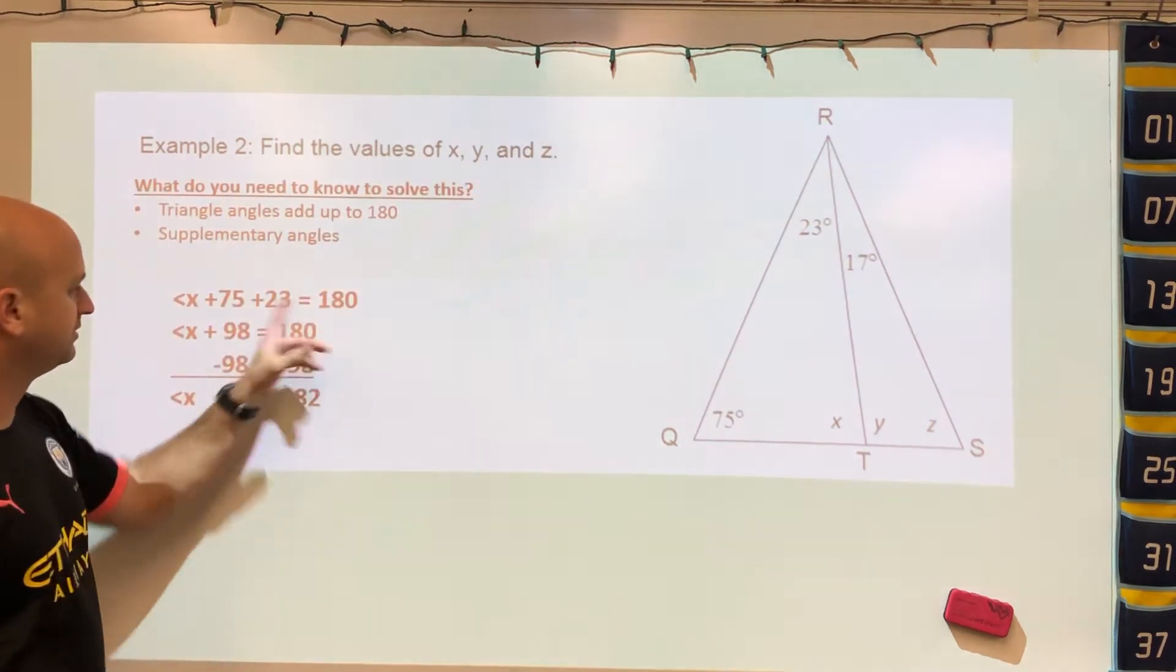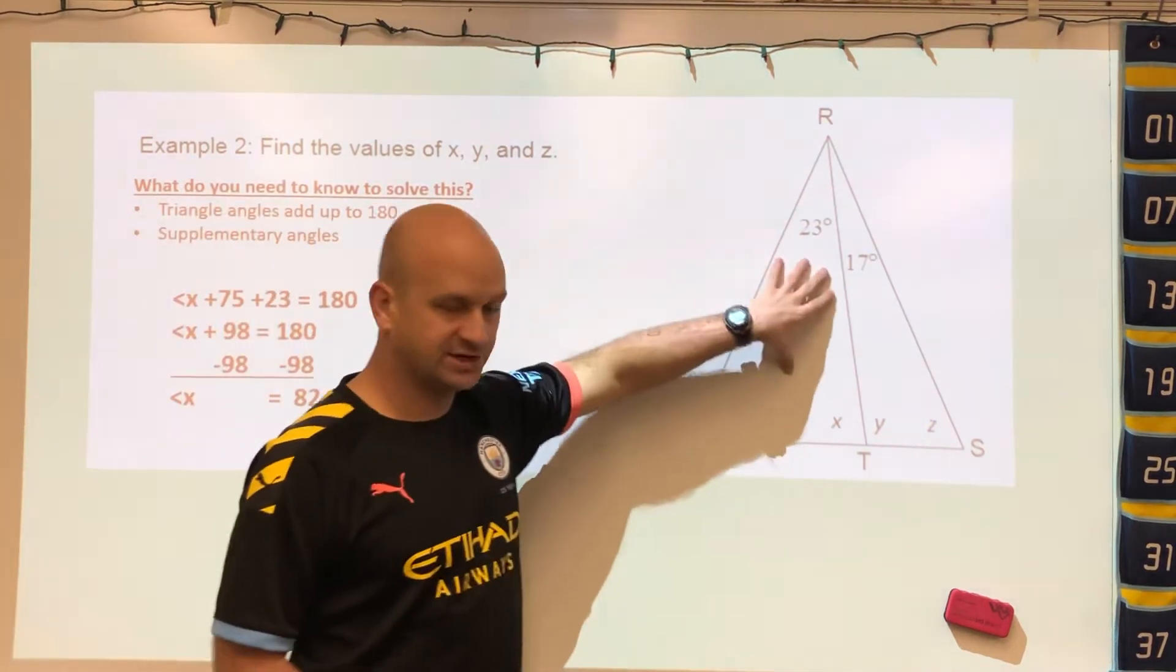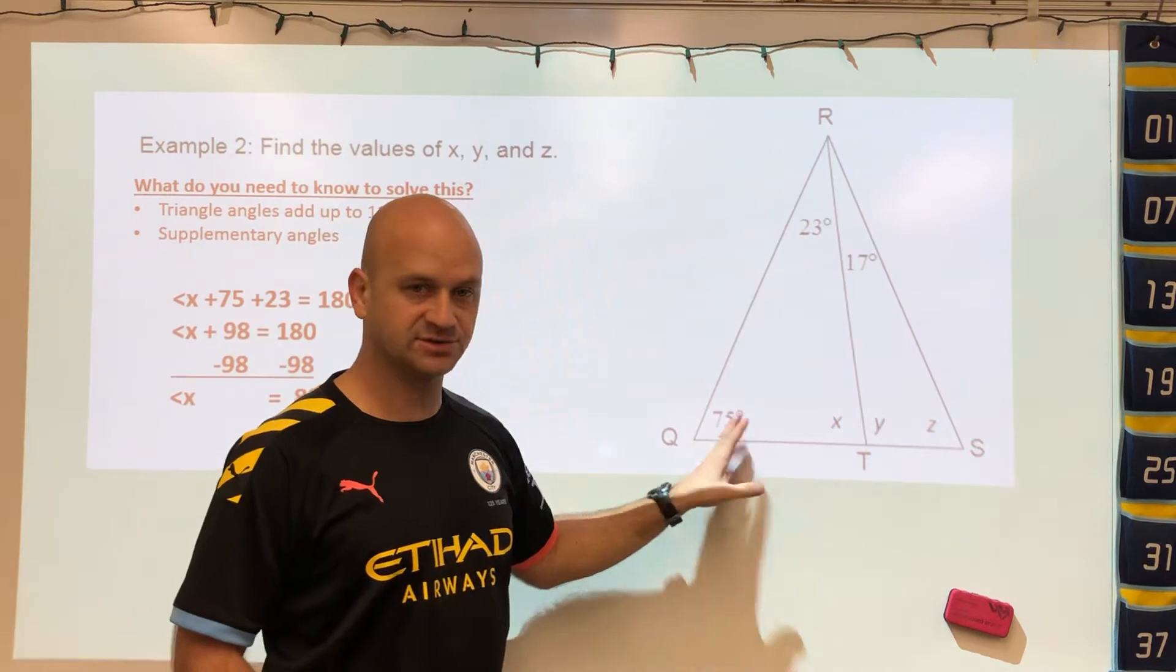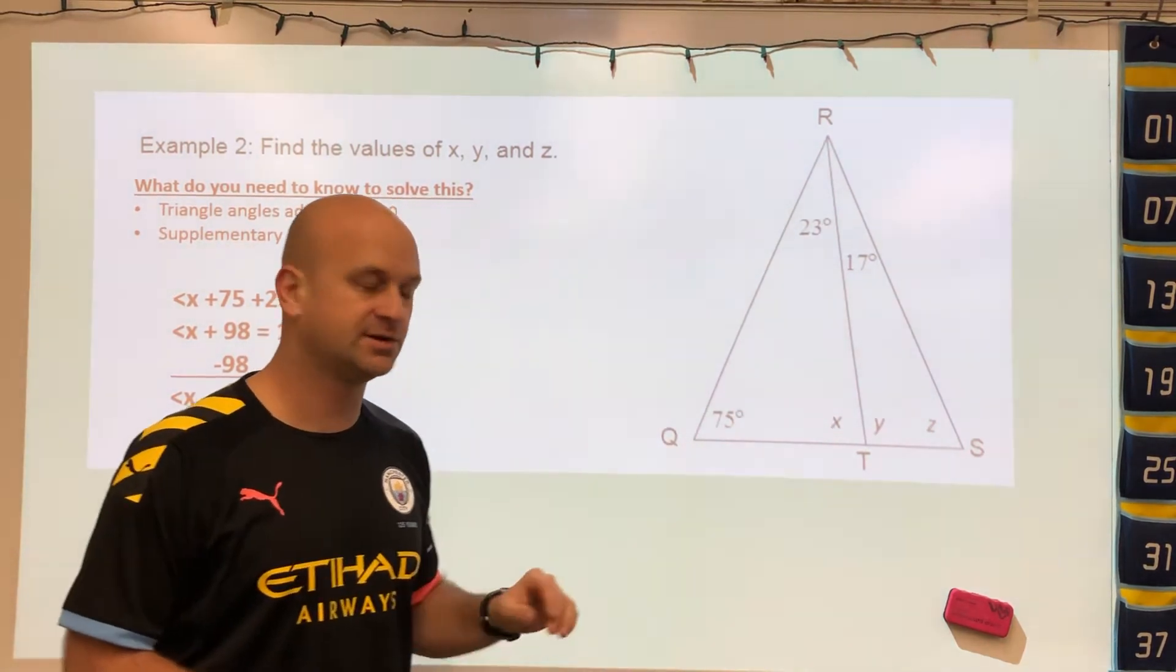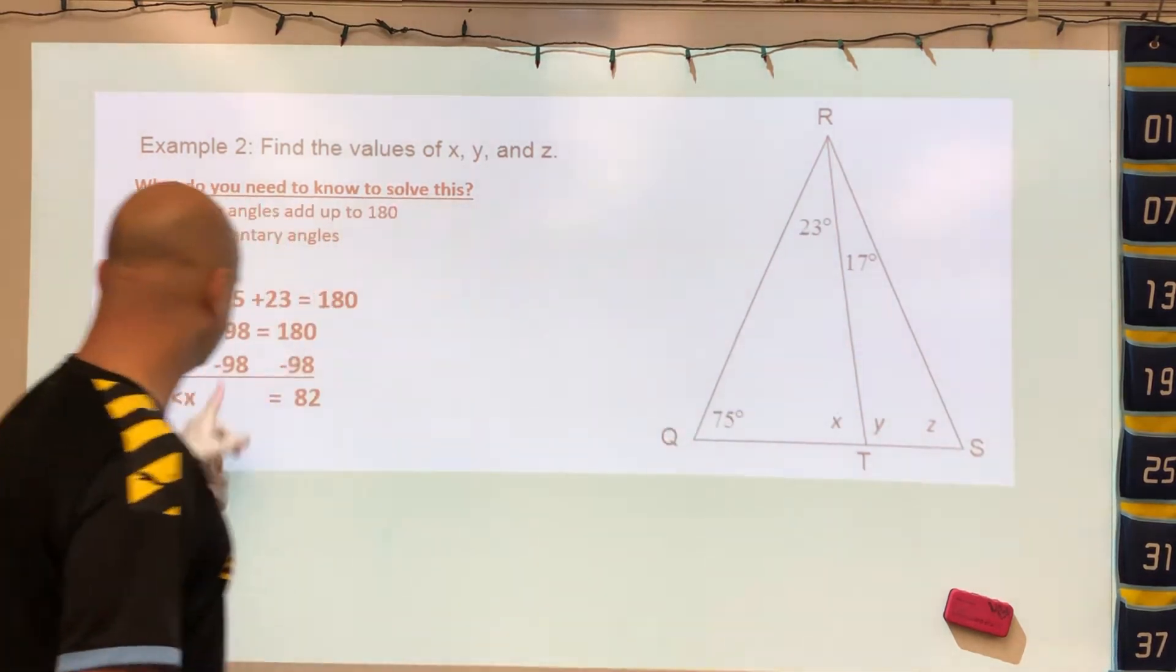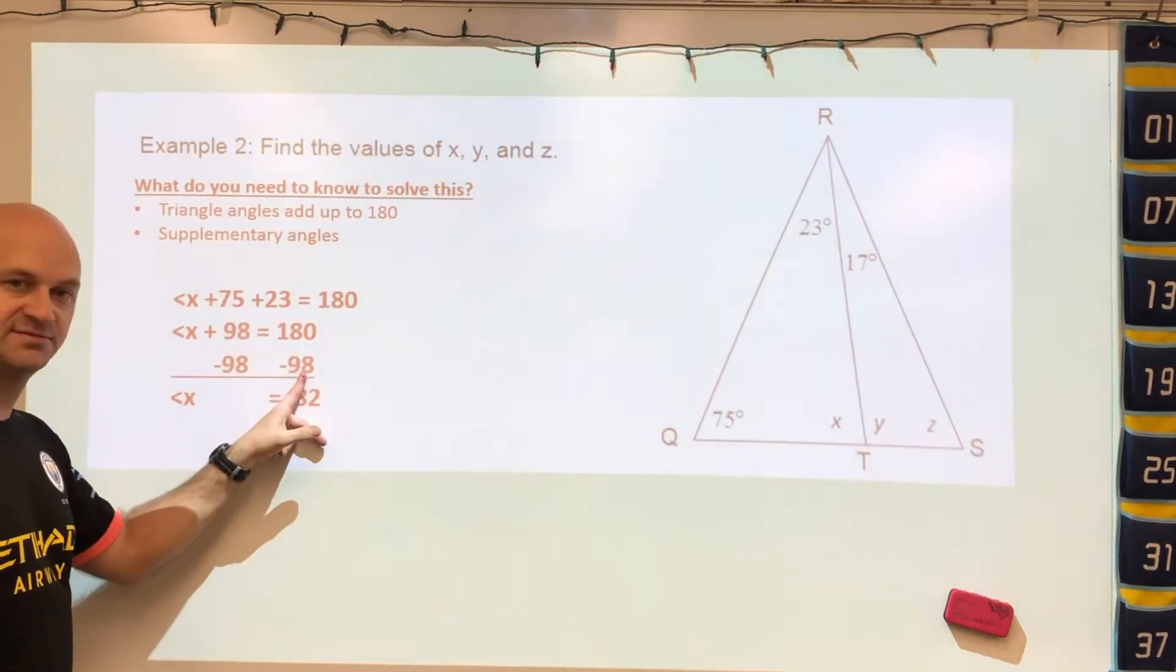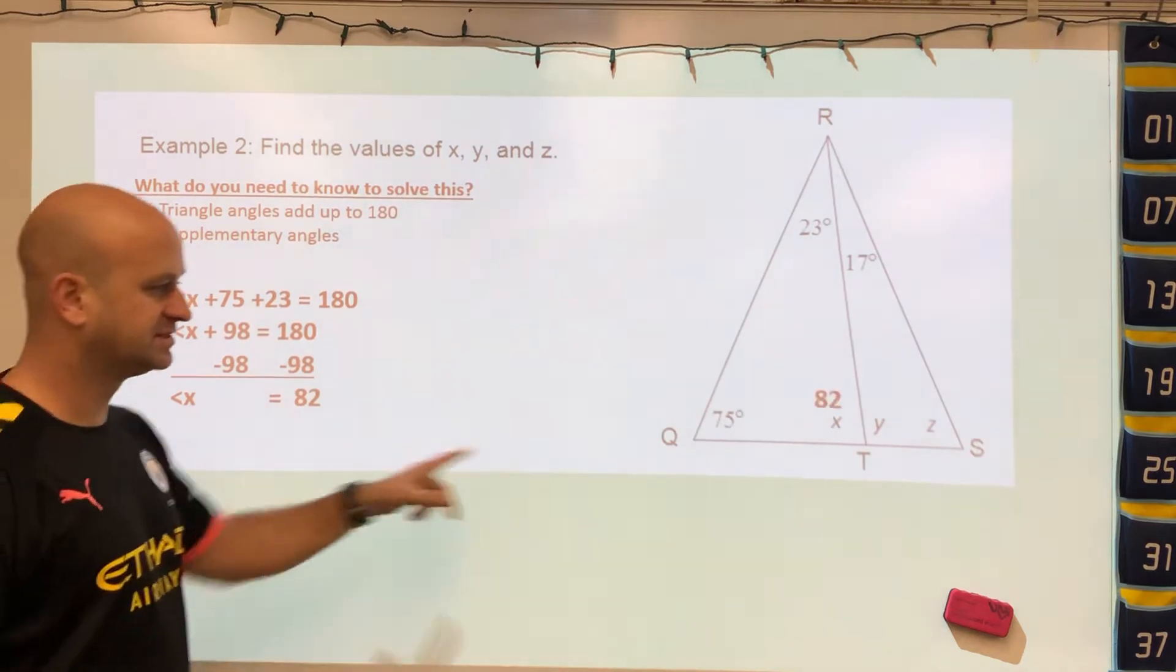The first thing we want to do is take the left triangle because we have two given angles we can find the third. That's a big hint in order to find the first angle of these problems. If we add those two up and then subtract that value from 180, we would get the missing value of 82.